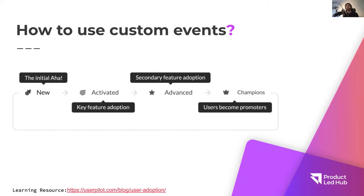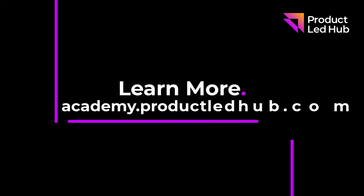Map out the first few events that are going to happen on day one, day two, day seven, day ten, day thirty — and then map it all out. If you map it out, it will work perfectly. Then you know what happens at each stage, what you want to happen at each stage, and how to push users to the next stage.